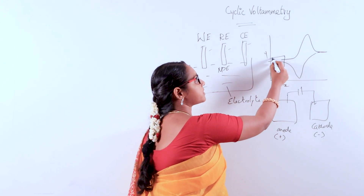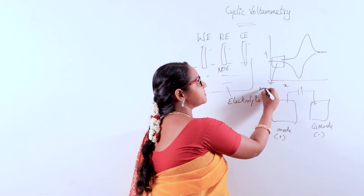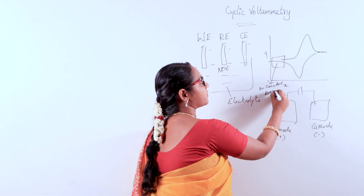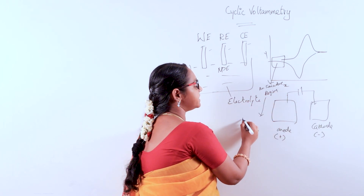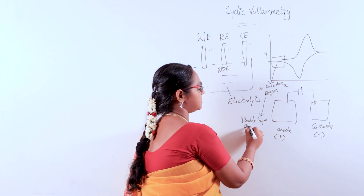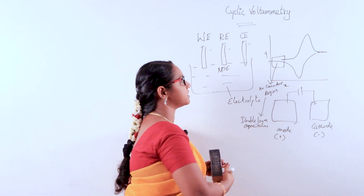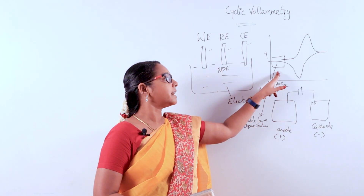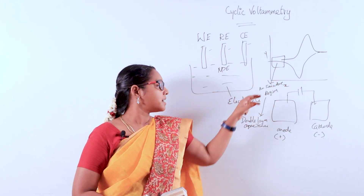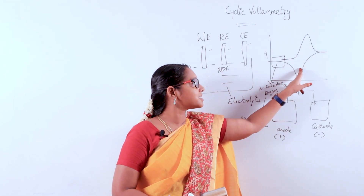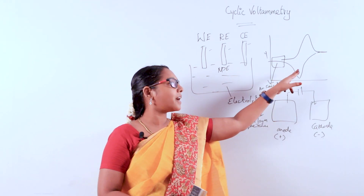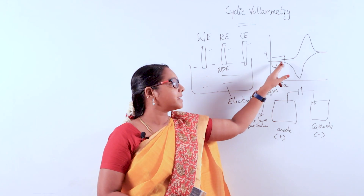The other regions of the curve are the non-faradaic regions, also called the double layer capacitance region. In this region, electron diffusion takes place, while in the oxidation and reduction peaks, electron transfer occurs. The faradaic region corresponds to electron transfer, and the non-faradaic region corresponds to double layer capacitance.